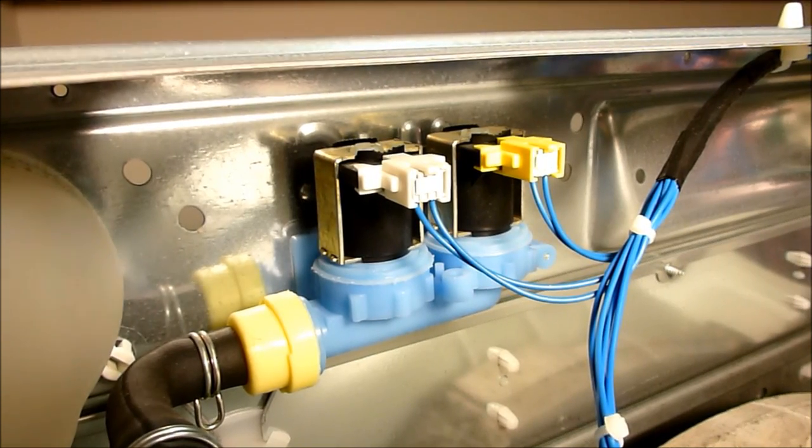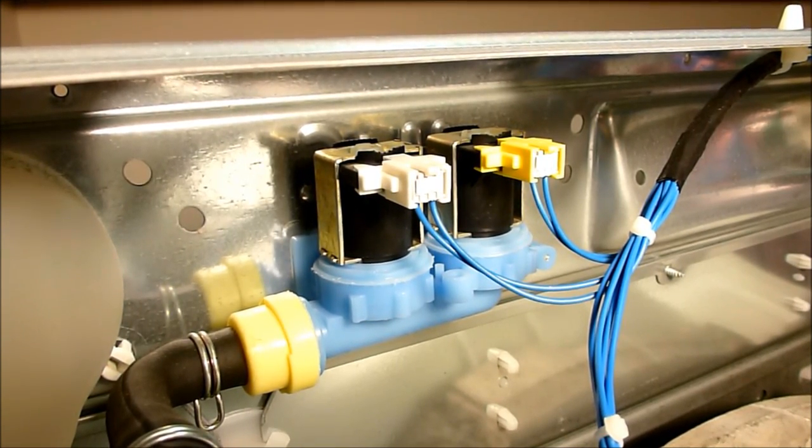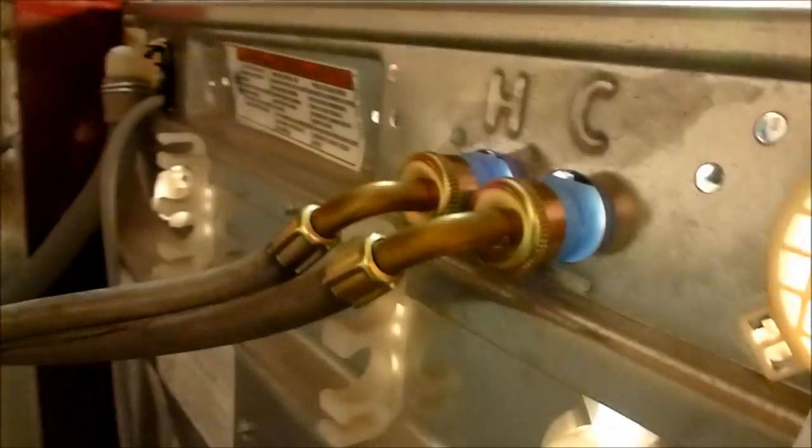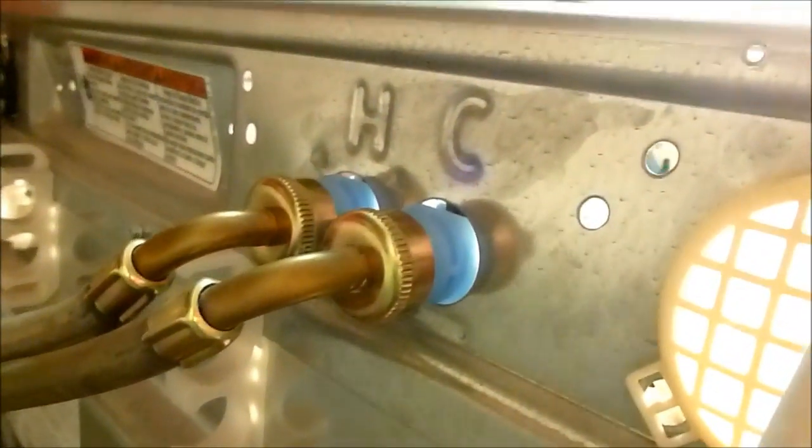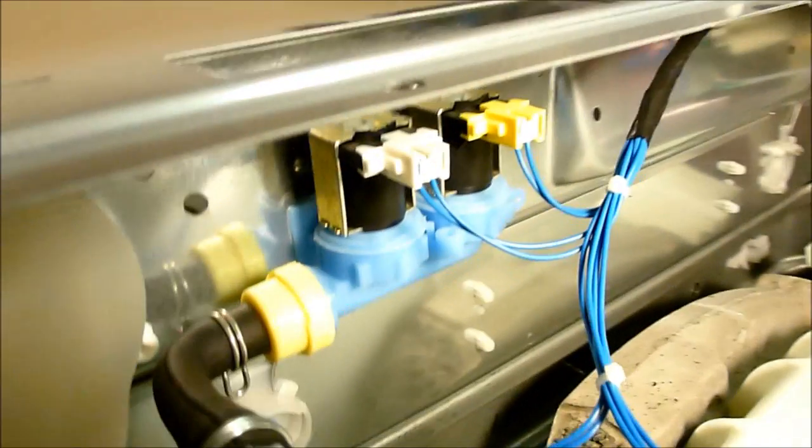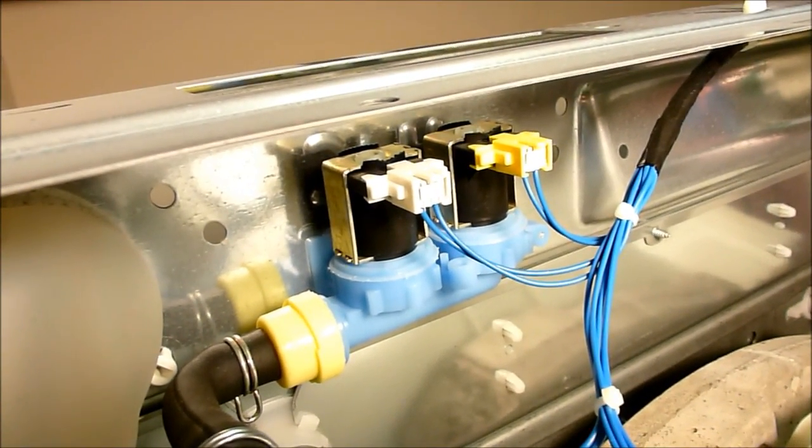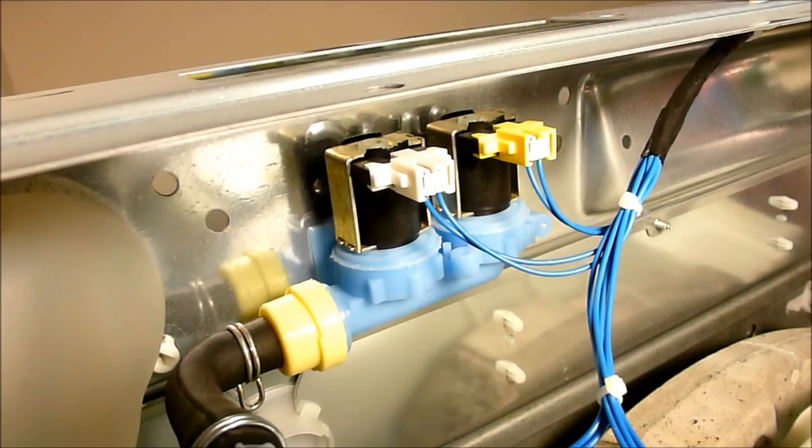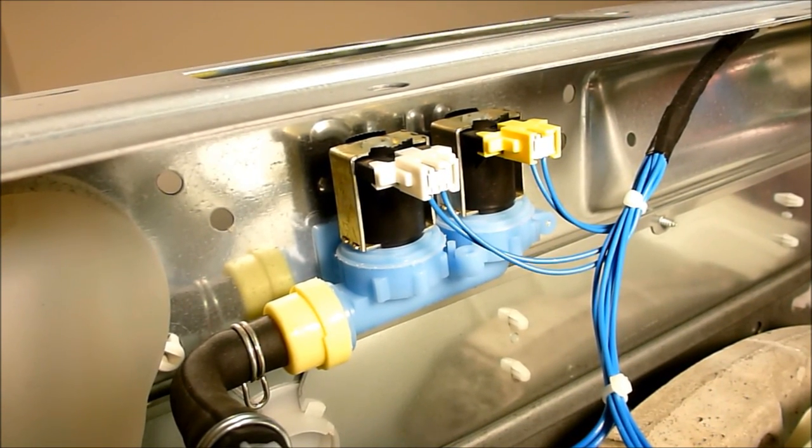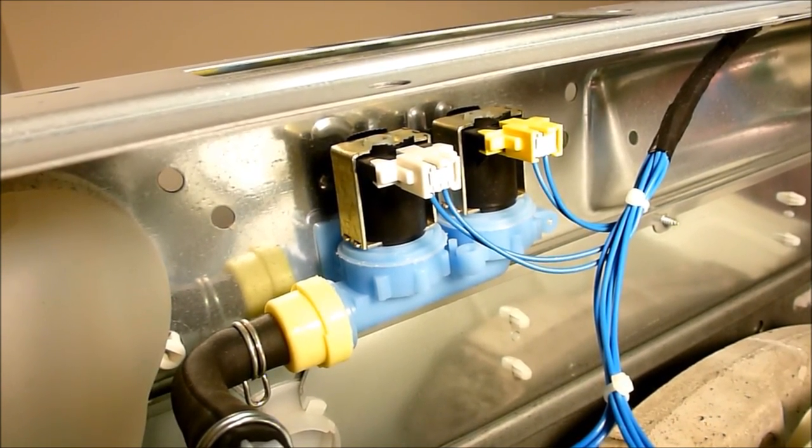So I've determined that it is the water inlet solenoid, which you see here. If you look, this is where the two water hoses connect. Right from the back of the washer. And what I did is I disconnected the power cord. And I turned off both water supplies, waited for the hose to relieve any pressure. There was no drip.